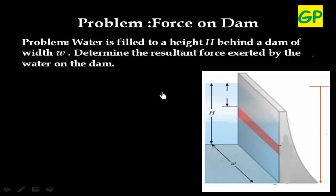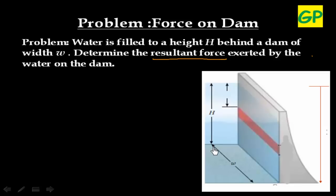We have to find the resultant force exerted by the water on the dam. We have been given a dam — this is the wall of the dam. Water is filled up to a height of H, and the width of the dam is W. We need to find what force this water is applying over this dam.